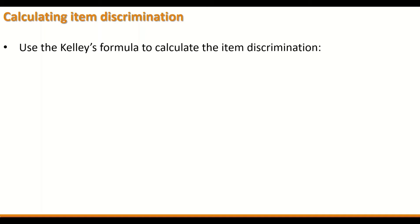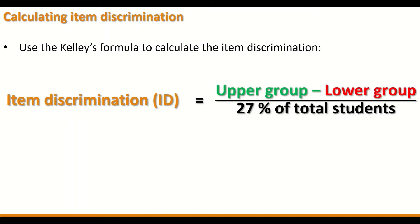Kelly's formula is then used to calculate item discrimination: ID equals the upper group minus the lower group, divided by 27% of the total number of students. This calculates the upper group proportion and the lower group proportion and subtracts them to get the ID. An ID percentage can also be calculated by multiplying the ID value by 100.